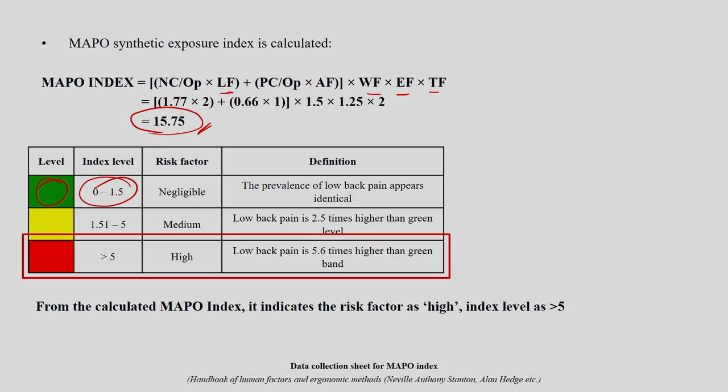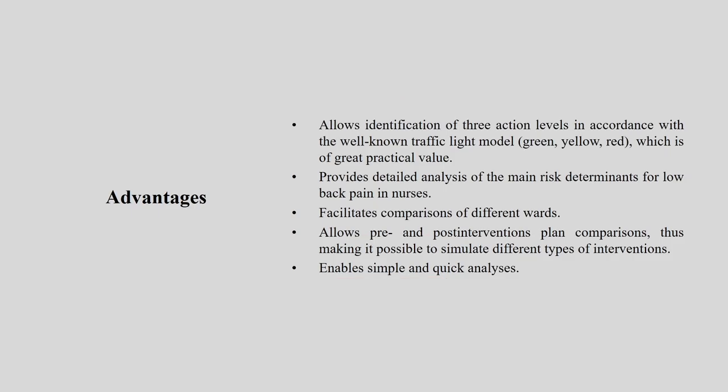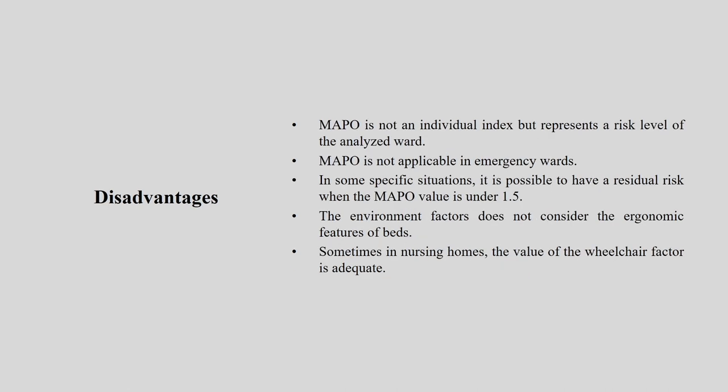That is how you use this MAPO index for evaluating and assessing manual patient handling at the hospital. As a protocol, the advantages of this tool are: it allows identification of three action levels in accordance with the well-known traffic light model (green, yellow, red), which is of great practical value. It provides detailed analysis of the main risk determinants for low back pain in nurses, facilitates comparison of different wards, allows pre and post intervention plan comparison making it possible to simulate different types of intervention, and enables simple and quick analysis.